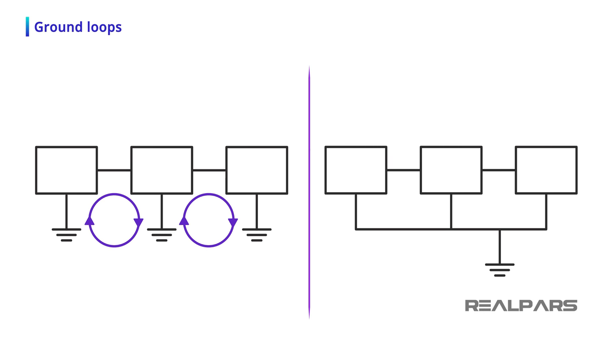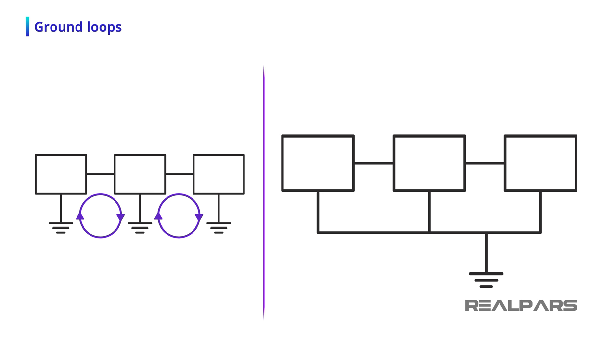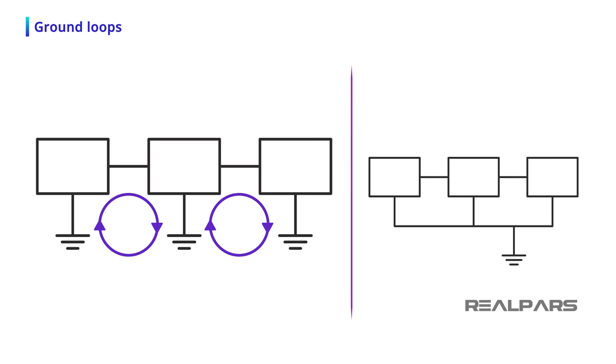In our example, ground loops can be avoided if all three devices are grounded together at one point. This type of grounding is referred to as star point grounding. Unfortunately, in large industrial plants, multiple point grounding is the reality, and the possibility of ground loops is high. With so many connections referenced to ground within a facility, the chances of needing more than one ground point are great.